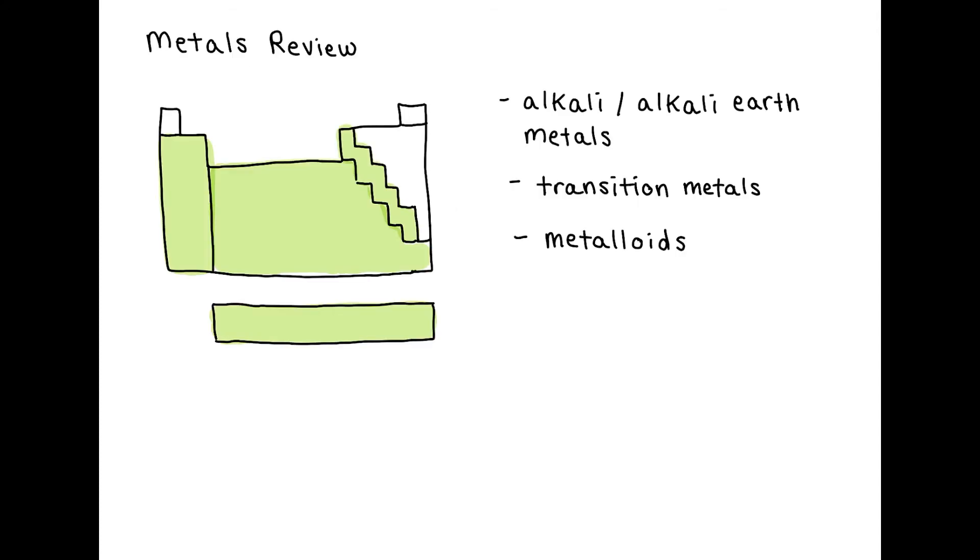First, let's do a quick review of what metals are and where they are on the periodic table. Metals make up the majority of the periodic table, with the first metals being alkali and alkali earth metals in columns 1 and 2.